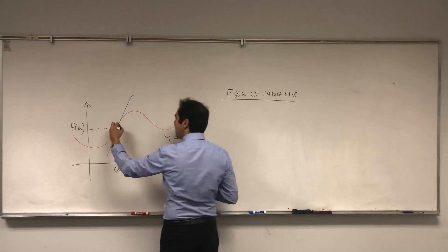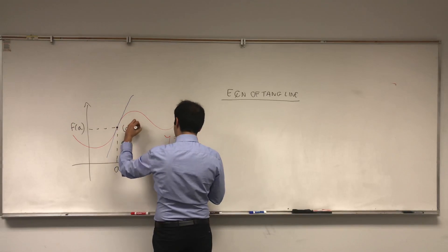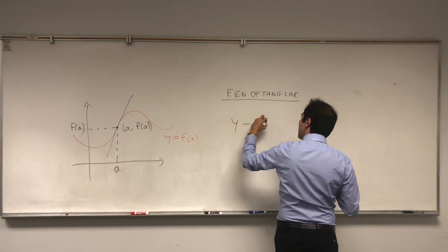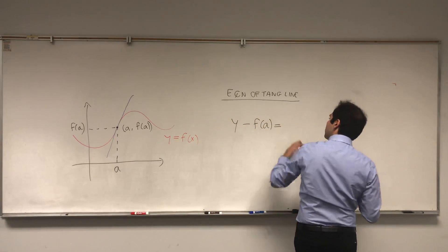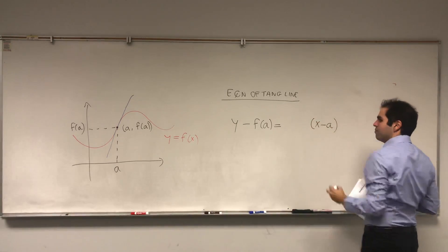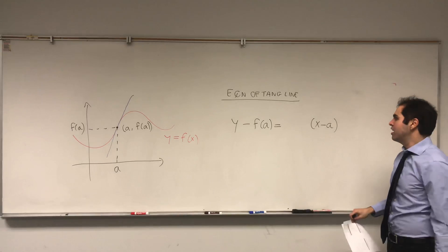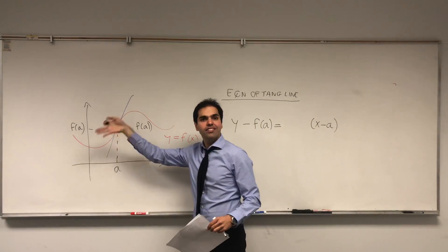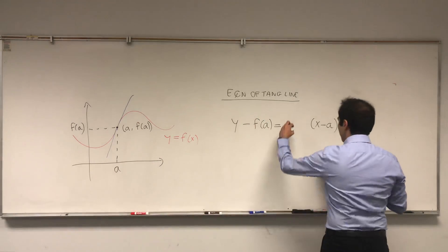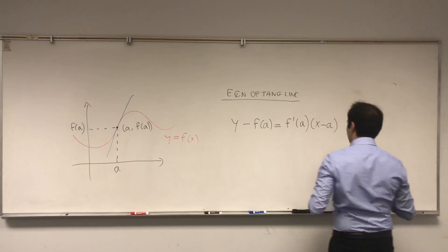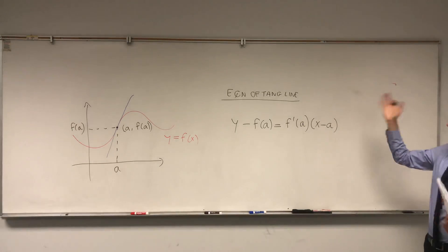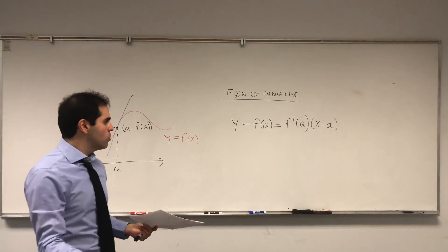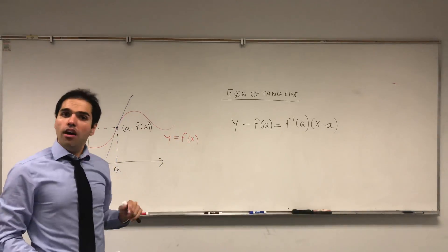It's simply as follows. Notice the line goes through a comma f of a. So it has to be of the form y minus f of a equals something times x minus a, just because it goes through that point. And moreover, the slope has a very precise name. It's what's called f prime of a. And that is for single variable functions.